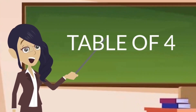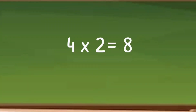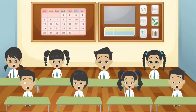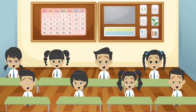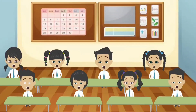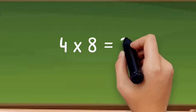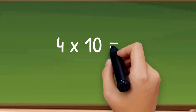Let's learn table of 4. 4 ones are 4. 4 twos are 8. 4 threes are 12. 4 fours are 16. 4 fives are 20. 4 sixes are 24. 4 sevens are 28. 4 eights are 32. 4 nines are 36. 4 tens are 40.